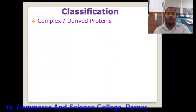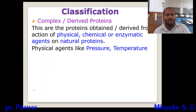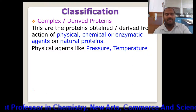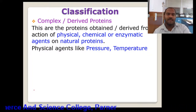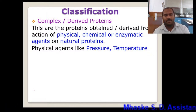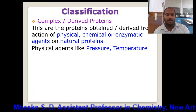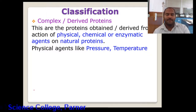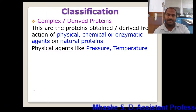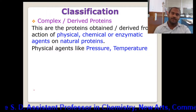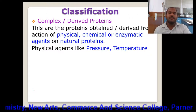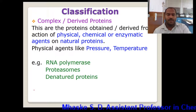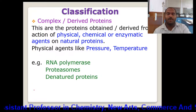Let's consider next, that is the complex or derived proteins. Complex or derived proteins are the proteins which are obtained or derived from the action of physical, chemical, or enzymatic agents on the natural protein. These are either formed by the action of physical agents, chemical agents, or the enzymatic agents on naturally occurring proteins. For example, physical agents which we can use are pressure, temperature, or a change in pH or acidity. This gives a change in the structural composition of the protein. Examples are RNA polymerase, proteans, and denatured proteins.